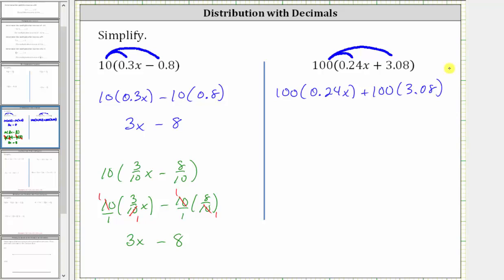The shortcut for multiplying by 100 is to move the decimal point two places to the right. 100 times 0.24x is 24x, plus 100 times 3.08 is 308. The expression simplifies to 24x plus 308.